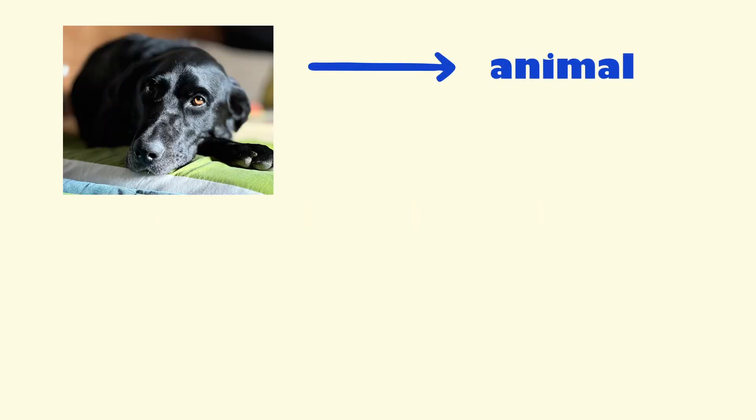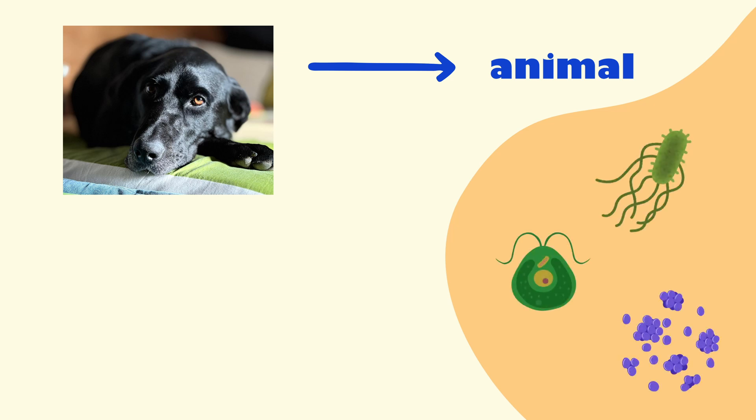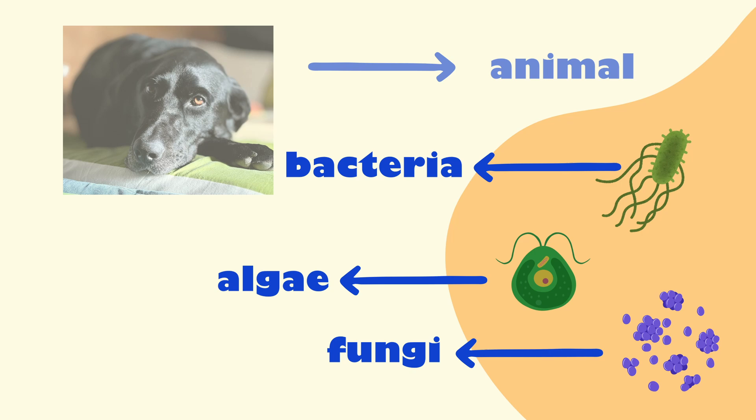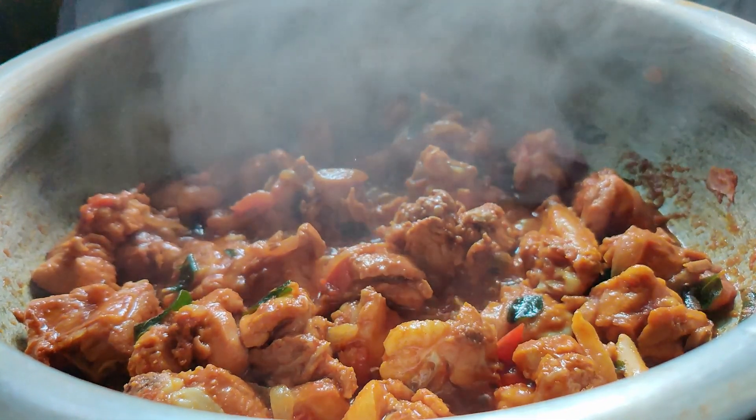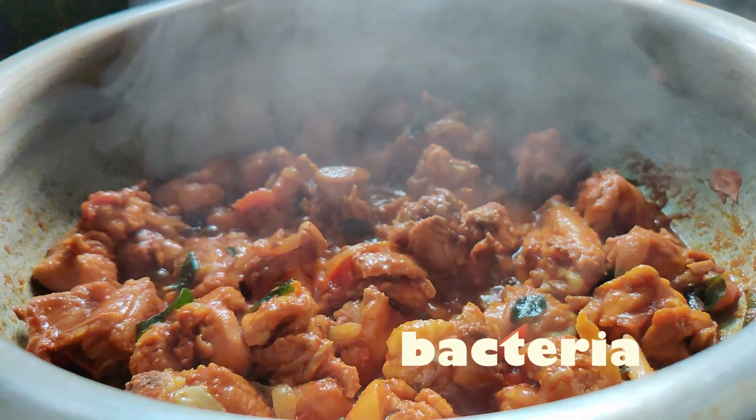My dog is an animal, but microorganisms can correspond to other living kingdoms. They can be bacteria, fungi, algae, and so on. Regarding food, when talking about microorganisms, we refer specifically to different species of bacteria and fungi.